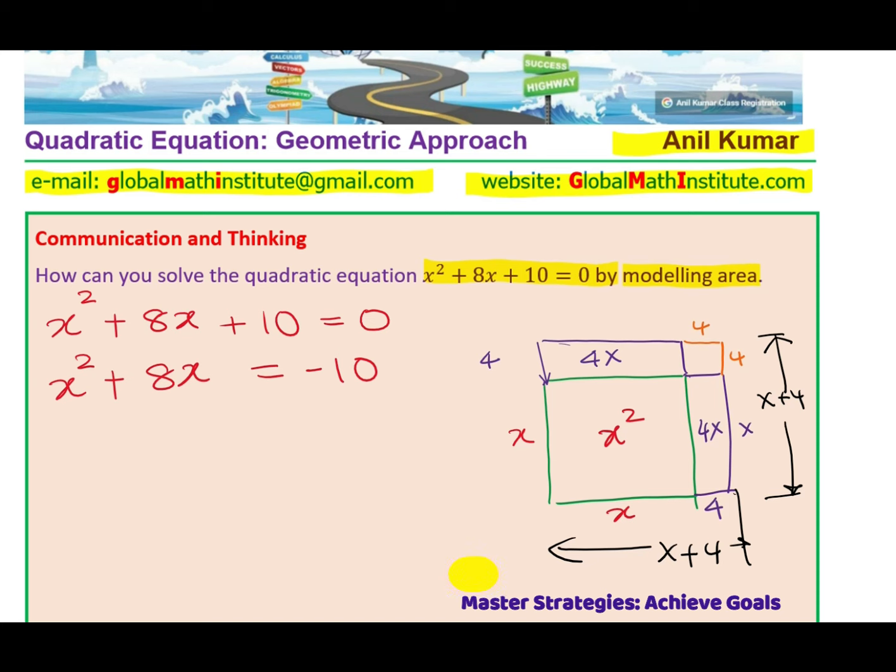The name completing squares comes from this geometric process. What we really did is that we added area of 16 in it. 4 times 4 is 16. So x² + 8x is to be added by 16 to complete this square. But since it is an equation, we will add it on both the sides.